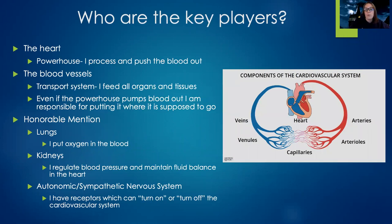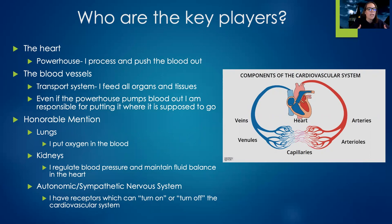There's the heart, which is the powerhouse — pretty much in charge of processing and pushing the blood out. There's also the blood vessels, which are our transport system; they give all of our tissues and cells the nutrients and oxygen they need. Then there are the lungs, which oxygenate the blood. Your kidneys help regulate blood pressure and maintain fluid balance. And the nervous system helps turn on and turn off your cardiovascular system. So lots of key players.